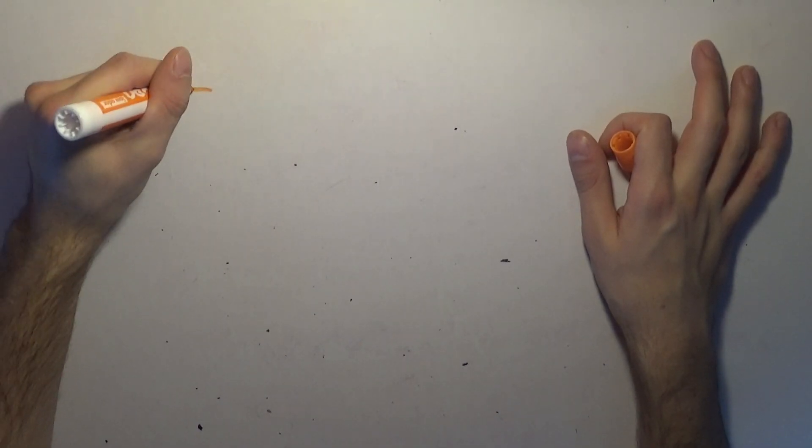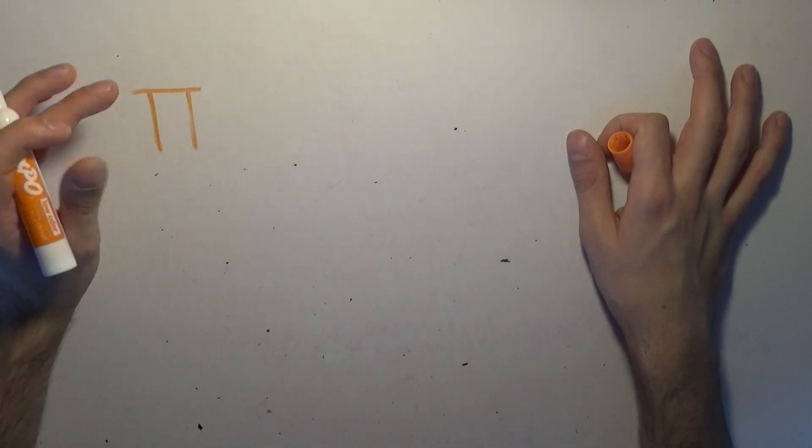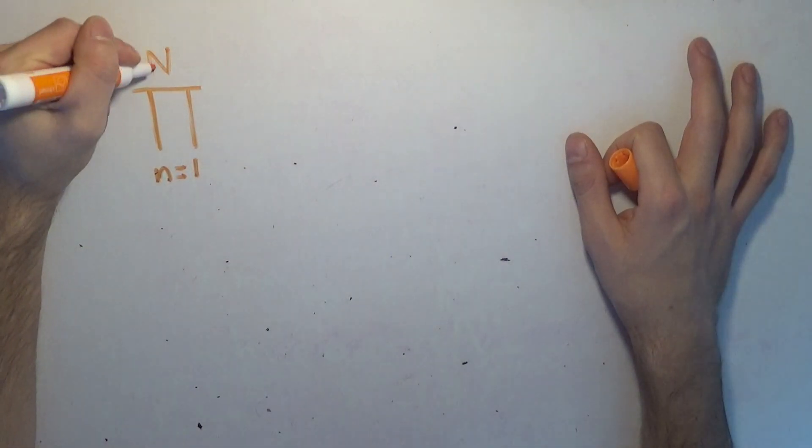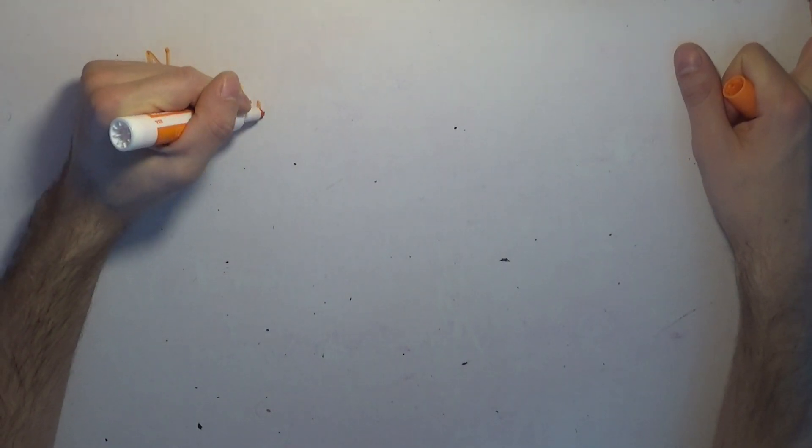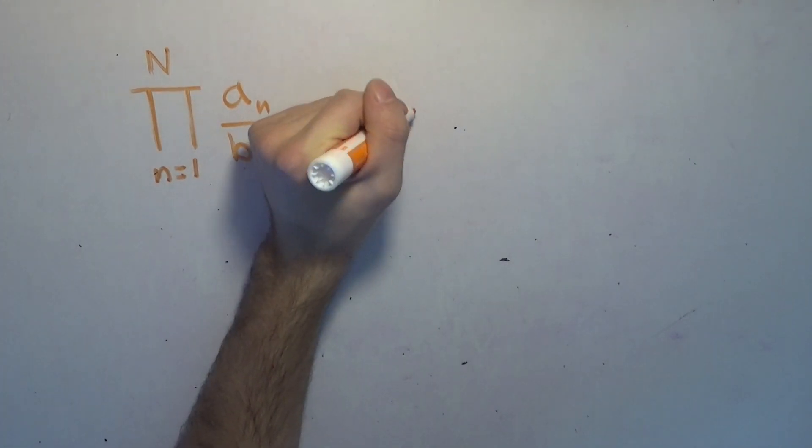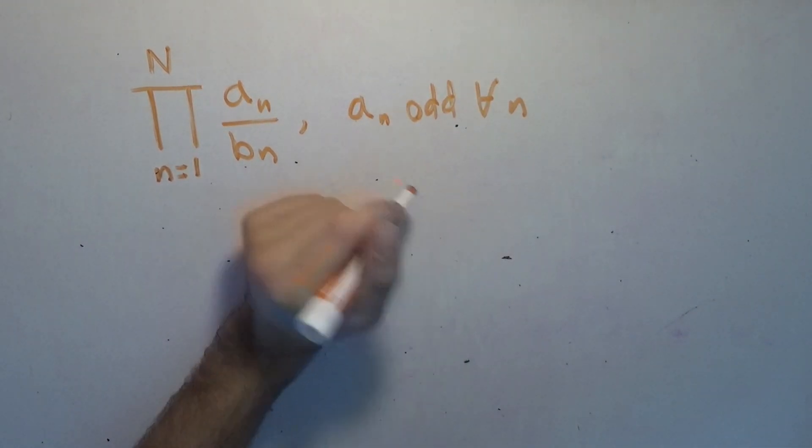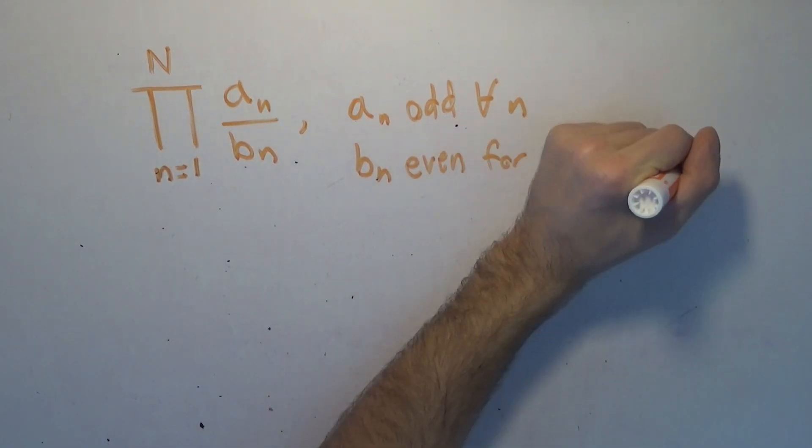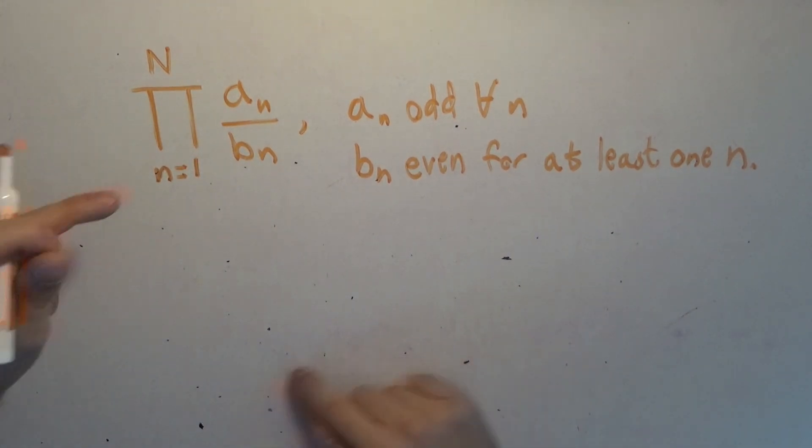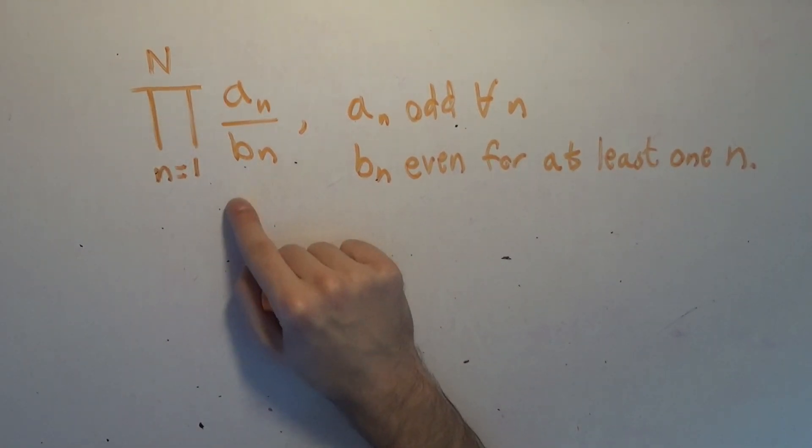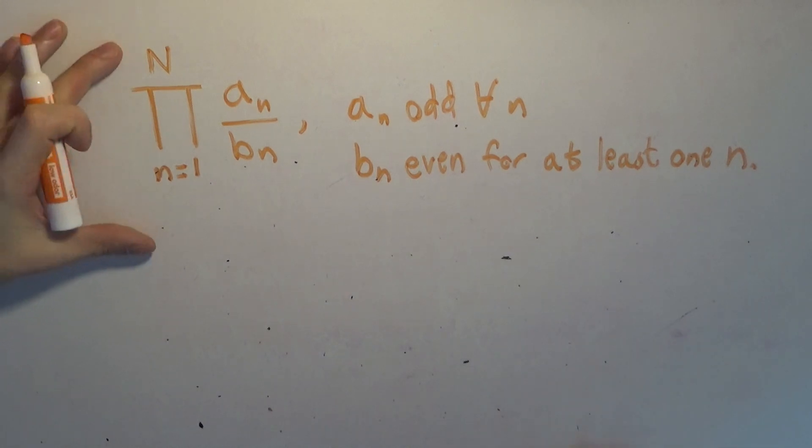So we start with some finite product using this pi notation. Say we start with N equals 1 and we go up to some number capital N. It's some number of terms in the numerator and some number of terms in the denominator with A_n odd for all n and B_n even for at least one n.